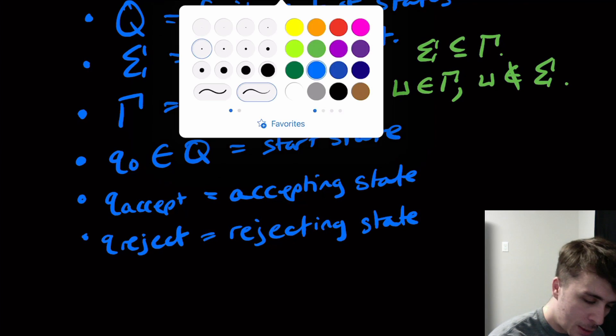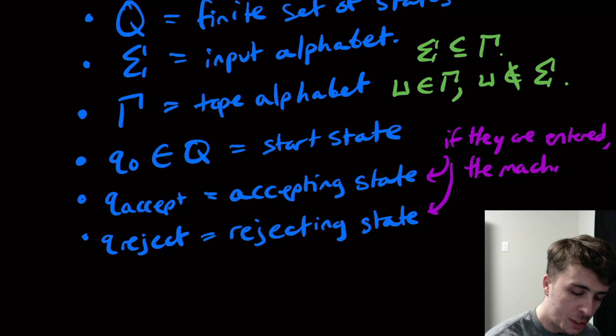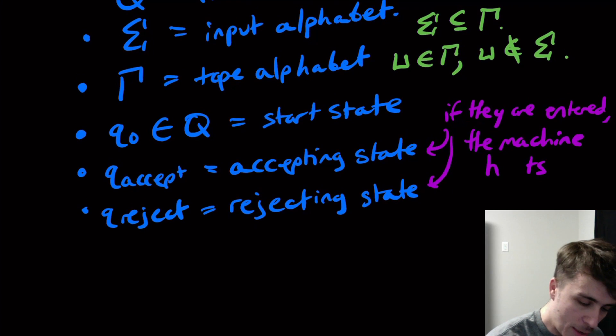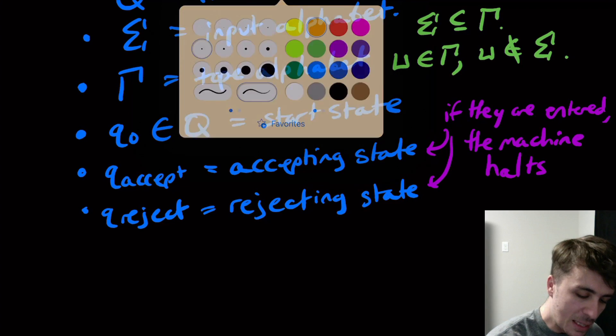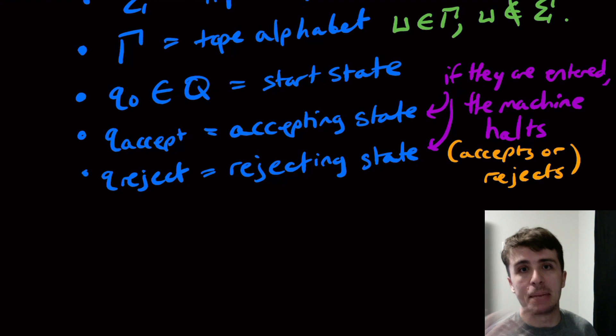The way to do that is we're going to have two states: qAccept and qReject. These are two special states—the accepting state for accepting the input and an explicit reject state. At every single point, we will always have a transition to apply, assuming we don't hit the left end of the tape and go left. The behavior of these two states is that if they are entered, the machine halts. So halts means either accepts or rejects, depending on what we're doing.